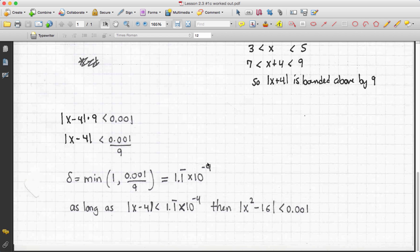So, my delta value that I choose is 1.1 repeating times 10 to the negative 4. In other words, as long as x minus 4 is smaller than this, then I'll be guaranteed that I land inside the epsilon neighborhood.